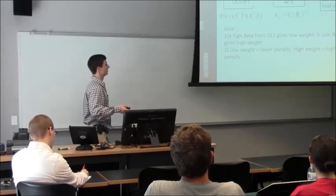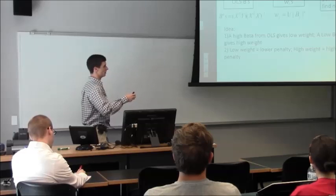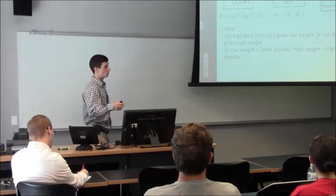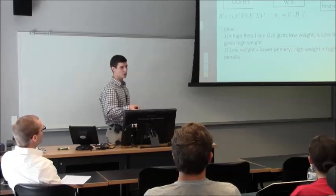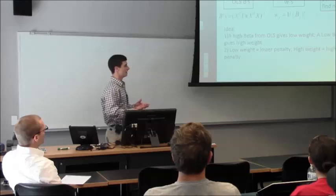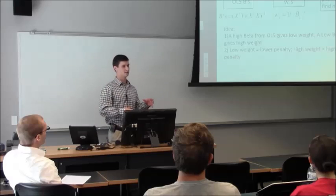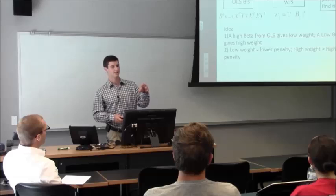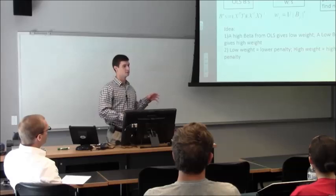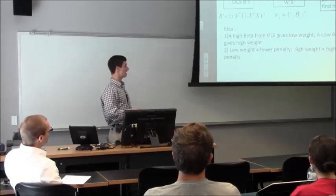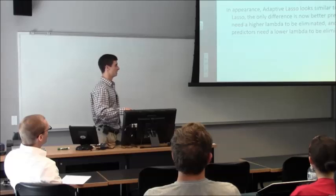So how it works. You start calculating the ordinary least squares betas. From there, you find all your weights, which is one over your OLS betas, raised to some tuning parameter, which is usually one. And so a really high beta from the ordinary least squares gives a really low weight. And then a low beta gives a really high weight. And then the lower the weight, the lower the penalty. So it can make a really good predictor last a lot longer, because now you're multiplying it by a lambda times like a 0.2, instead of if it's a really bad predictor, it would be 1 over like a 0.2. And then that'd give you a 5, so you're multiplying it by your lambda times 5, and you're penalizing it a lot higher. So it will send the bad ones to 0 a lot faster. It'll let the good ones last a little bit longer with an even higher lambda.